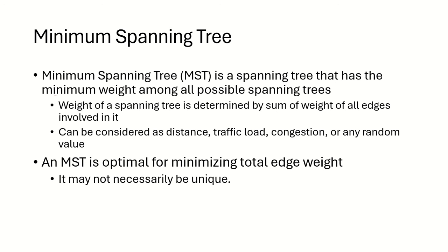A minimum spanning tree is a spanning tree that has the minimum weight among all possible spanning trees. The weight of a spanning tree is determined by the sum of the weights of all the edges involved in it. Whichever spanning tree has the minimum total cost is referred to as the minimum spanning tree. These weights can represent distances, traffic loads, congestions, or any other value in real-life applications.